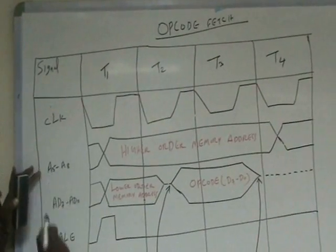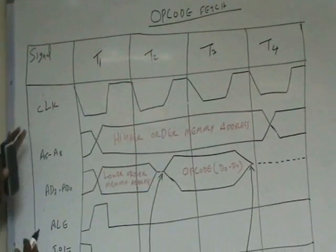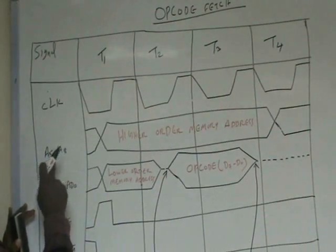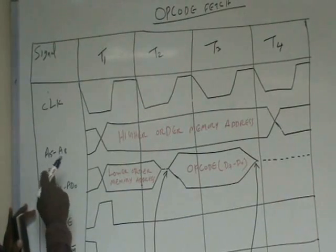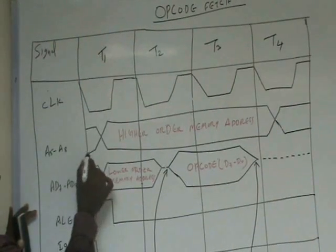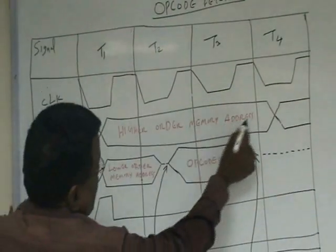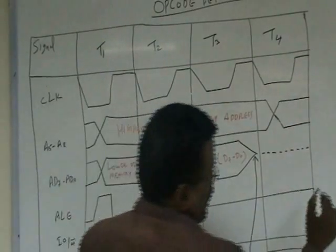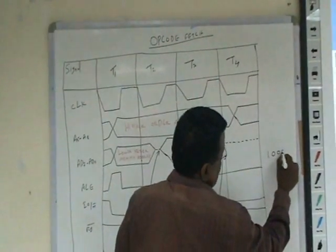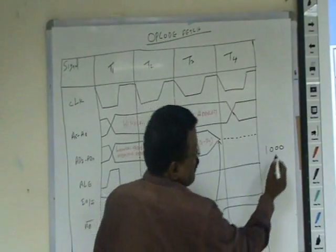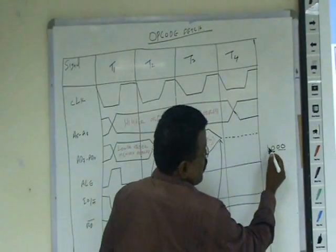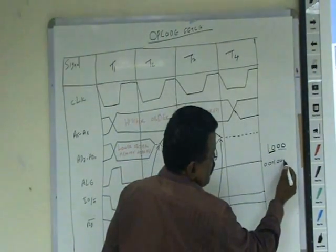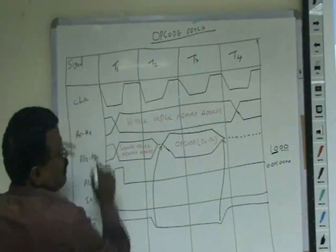Now, take A8 to A15 — this is the higher-order address bus. In the 8085, there are 8 pins dedicated for this higher-order address bus. This bus always carries the higher-order memory address. When an instruction is executed from a particular memory location — suppose from memory location 1000 — the higher-order value '10', that is 0001 0000, is loaded on A8 to A15.